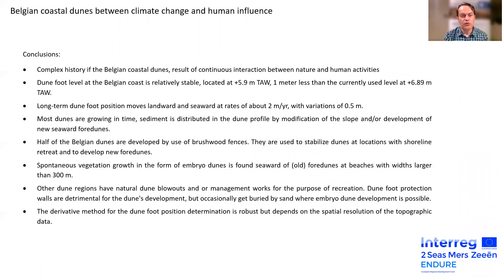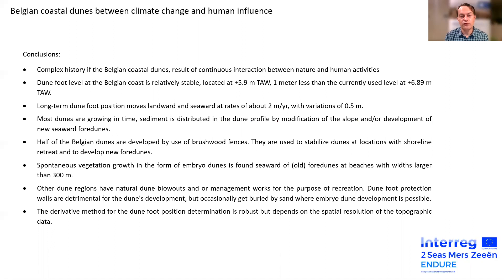Now some conclusions. The history of the Belgian coastal dunes is complex, resulting from continuous interaction between nature and human activities. The dune foot level at the Belgian coast is relatively stable, located at 5.9 meters TAV — one meter less than the currently used level of 6.89 meters TAV. The long-term dune foot position moves landward and seaward at consistent rates of about two meters per year with variation of about half a meter. Most of the dunes are growing in time, with sediment distributed in the dune profile by modification of slope and/or development of new seaward foredunes.